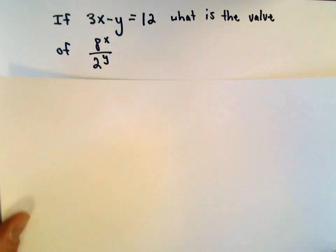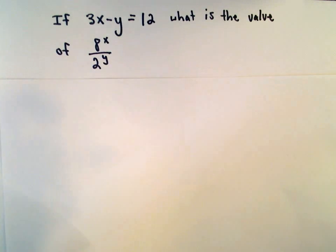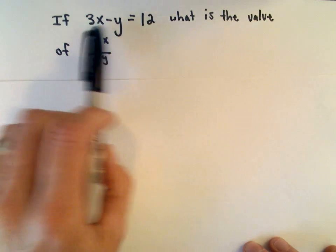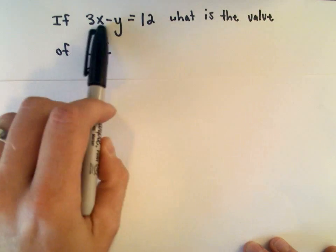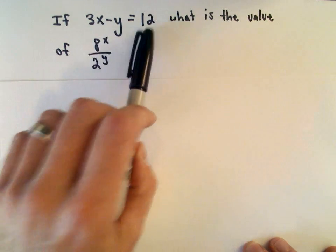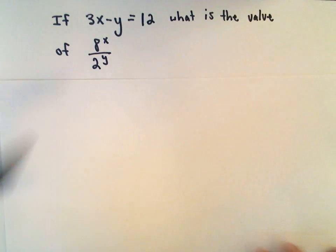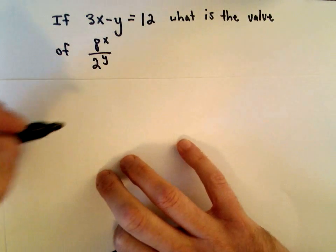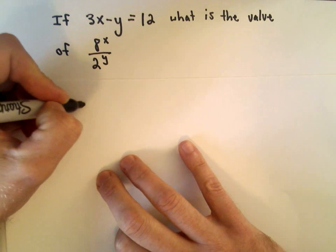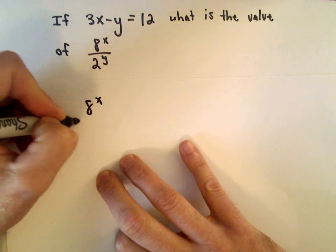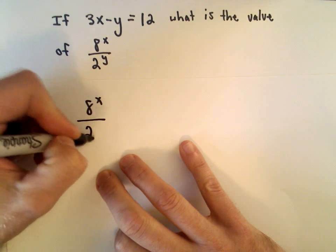This is one where you could start by plugging in values of x and y that give you 12 and simplifying. But let's do it the algebraic way and show what they're going for here.